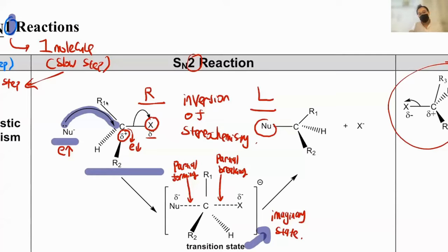remember, every time you want to do an attack, it's an element of surprise. You want to give a person an element of surprise, what do you do? You attack from the back or you attack from the front? No, you won't do that. So you always attack from the back and therefore you will cause an inversion. So this is SN2.